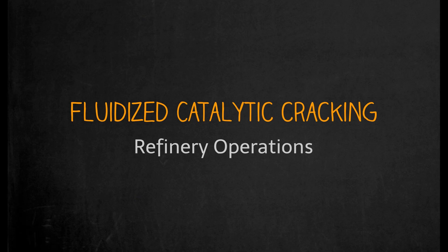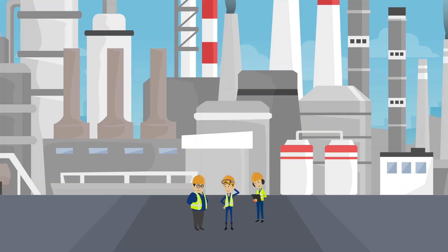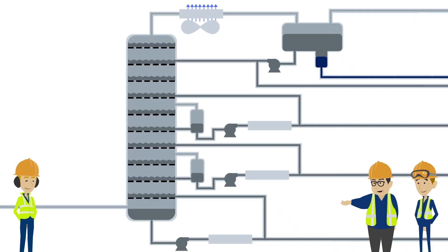Typical product cuts are overhead gases, naphtha, diesel, and heavy fuel oils. Let's join our operators in the field for the walkthrough. We are still looking at the FCC unit — this is the fractionator tower, which cools the FCC reactor vapors and splits them into different products.